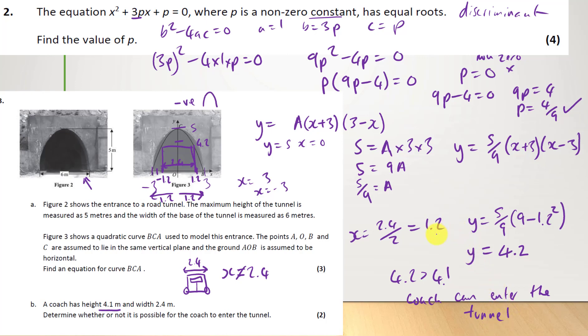So, all this means is when x equals 1.2, the height of the tunnel is 4.2 at this point. Right? So, that's the height of the tunnel. But the coach is 4.1 meters. So, it will fit through. But it will be a tight fit.